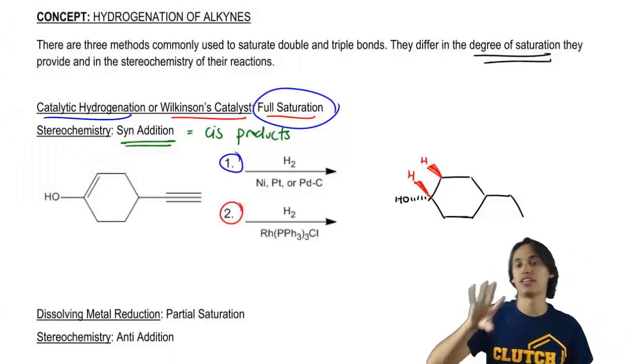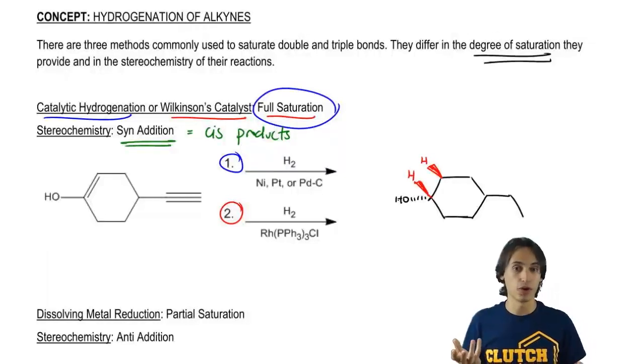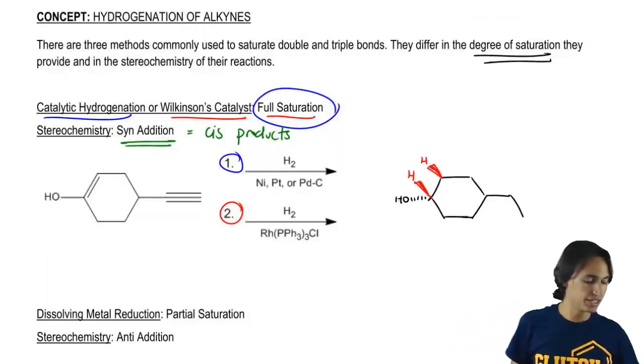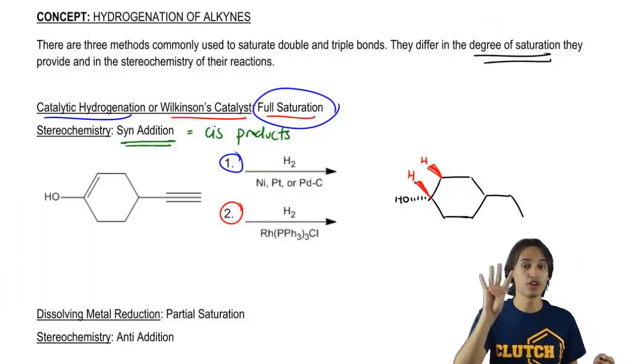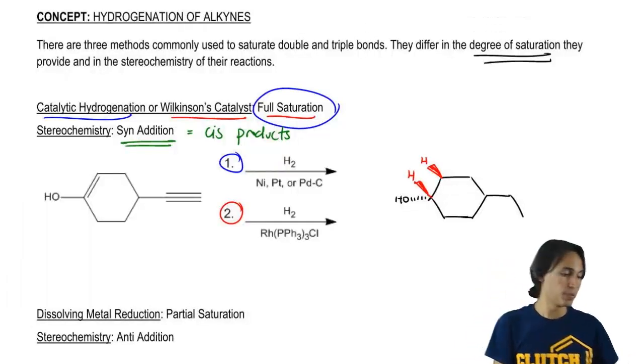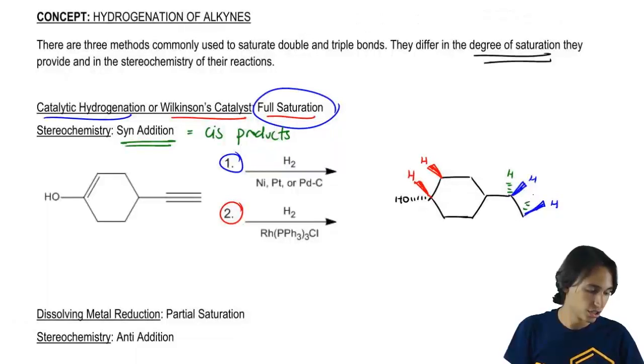Alternatively, I could have also had the H's add from the bottom, which means that the OH would have gone up as well. Same thing with the triple bond, except with the triple bond I added four hydrogens. I didn't just add two. So I basically added, let's say, two from the front, HH, and I also added two from the back, HH.